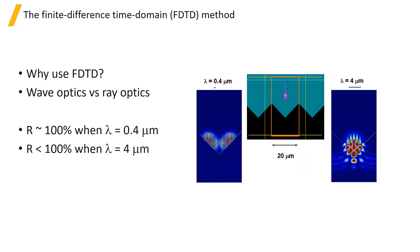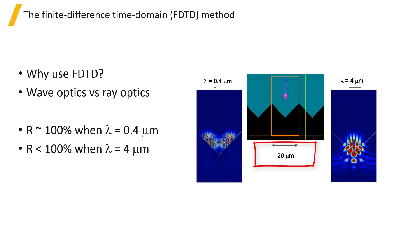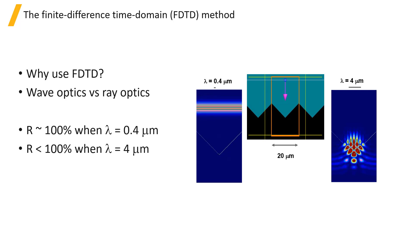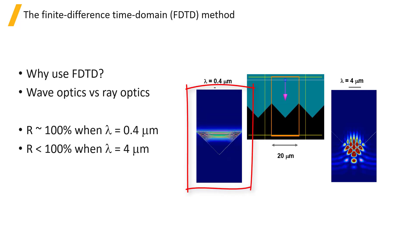We can run an FTTD simulation to see what happens for two different wavelengths. In the first, the incident wavelength is 400 nanometers, or 0.4 microns, while the structure is 20 microns in pitch, or period. Since the structure is much larger than the wavelength, we typically would simulate with ray tracing. As we run the FTTD simulation, we can see the result we expect from the ray optics analysis, namely, that almost all of the light is reflected.